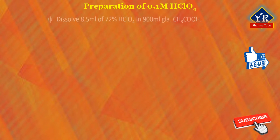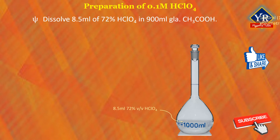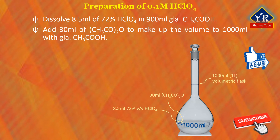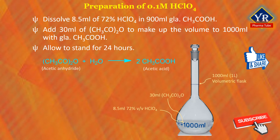Preparation of 0.1 molar perchloric acid standard solution. Dissolve 8.5 ml of 72% perchloric acid in about 900 ml of glacial acetic acid with constant stirring in a 1000 ml volumetric flask. Add about 30 ml of acetic anhydride and make up the volume to 1000 ml with glacial acetic acid, and keep this titrant allowed to stand for about 24 hours. Acetic anhydride absorbs all the water from perchloric acid and glacial acetic acid and renders the solution virtually anhydrous.